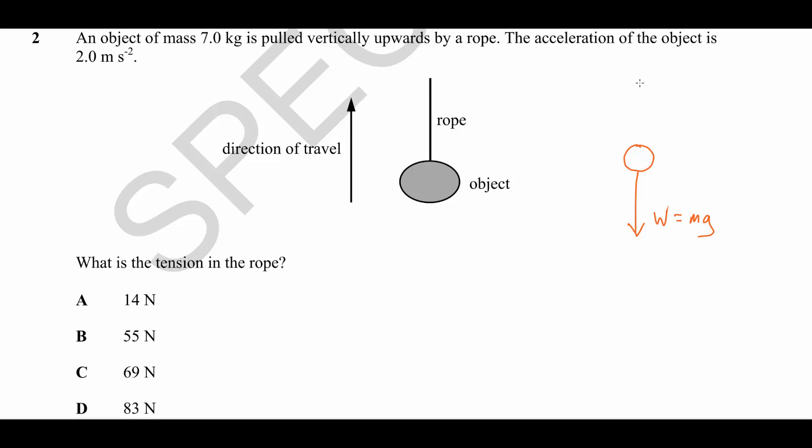And we know there is a tension acting upwards, which is what we're aiming to calculate. And we know that there is an acceleration upwards. Always represent an acceleration with a little arrow on the side like this with two arrowheads. And we know that that acceleration is two meters per second squared.